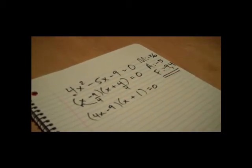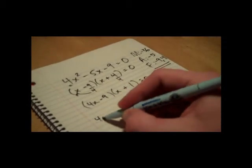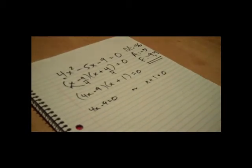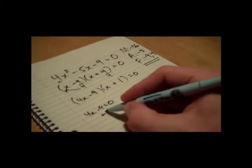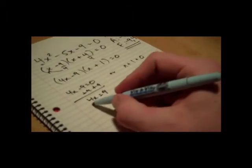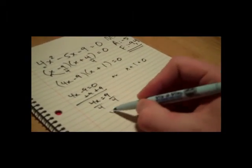Now the zero products property tells us either 4x minus 9 equals 0 or x plus 1 equals 0. Then you solve both of these equations. Add 9 to both sides here, 4x equals 9, divide by 4, x equals 9 fourths.